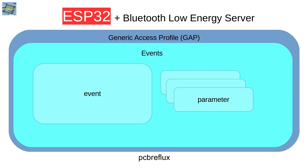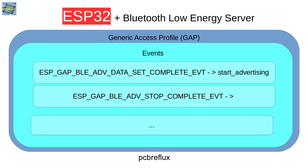Now let's talk about events. You have to write your own event handlers for the GAP (Generic Access Profile) and for the GATT (Generic Attribute Profile). Every GAP event has a declared event identifier and some parameters. For example, we receive an event when our advertising data is set as complete in our service, and then we can start advertising inside the Generic Access Profile.